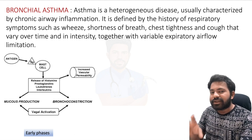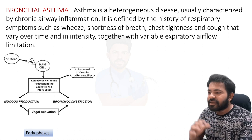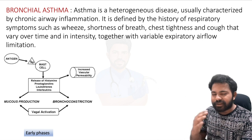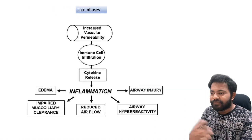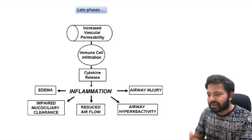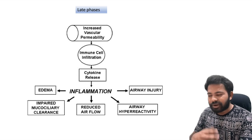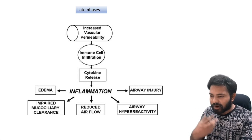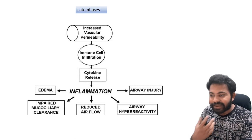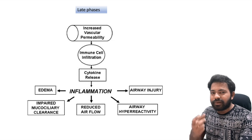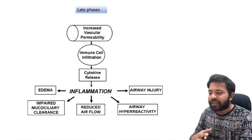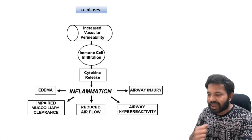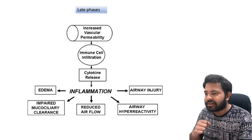These early-phase changes occur in the initial stages of bronchial asthma. When it becomes chronic — after six months to one year of repeated exposure — the increased vascular permeability causes immune cell infiltration, cytokine reactions, and further inflammation, leading to edema, airway injury, increased bronchoconstriction, airway hyper-reactivity, reduced airflow, and impaired mucociliary clearance. These occur in the late phases of bronchial asthma.